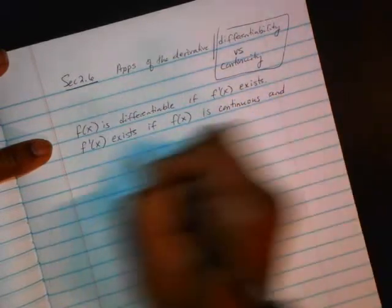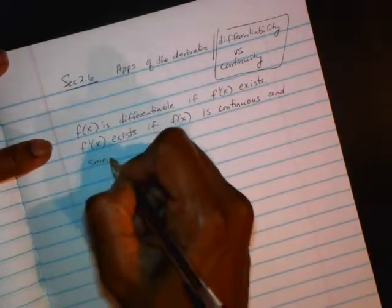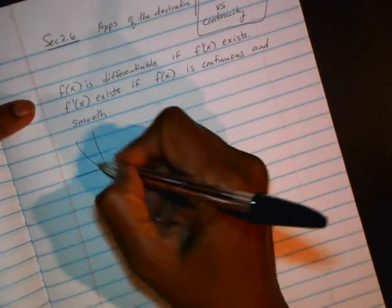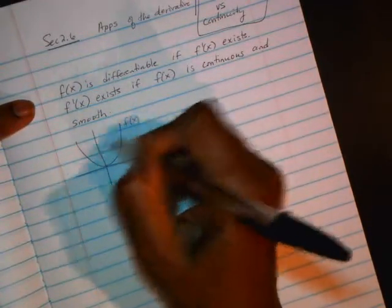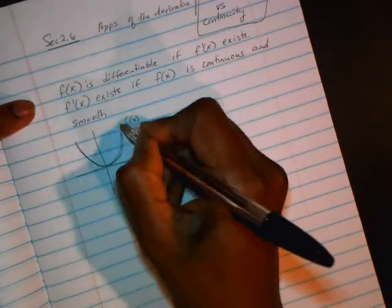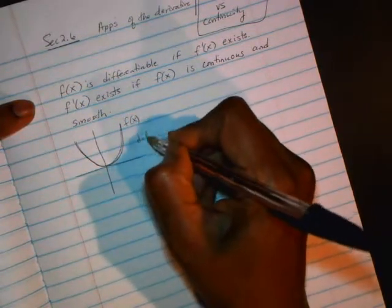and it is also smooth. So for example, a graph like this, f is continuous and it's smooth everywhere. So this is differentiable.